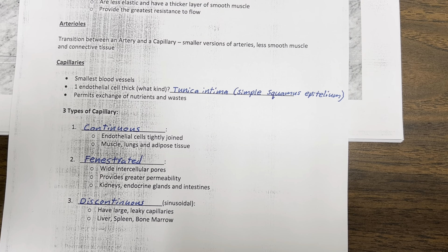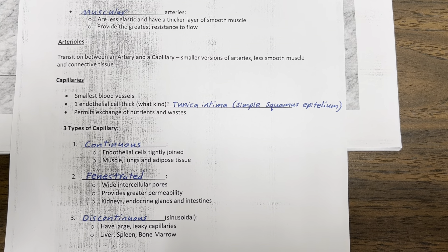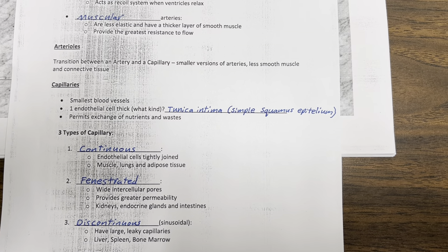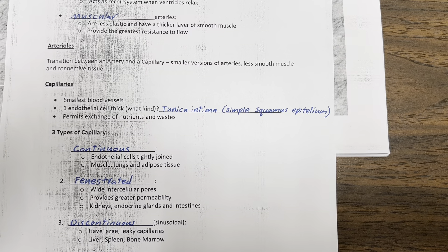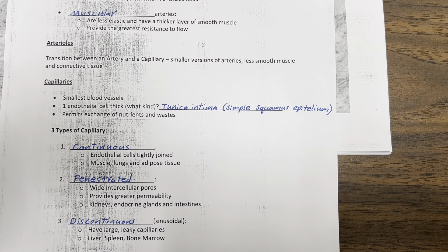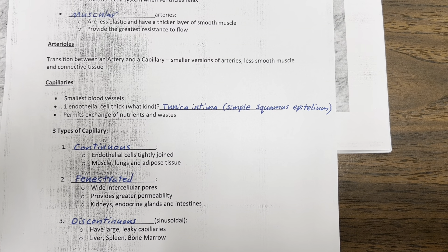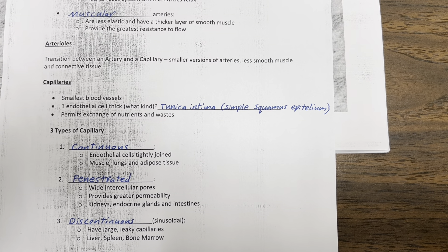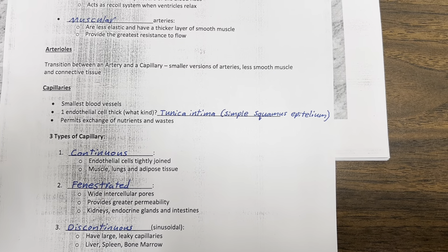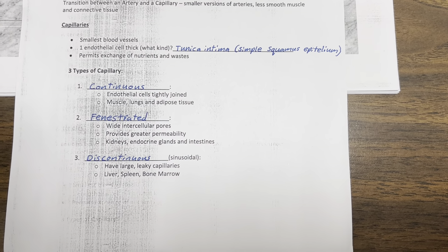Capillaries are the smallest blood vessels. They are one endothelial cell thick, made up of simple squamous epithelium, also called the tunica intima. Capillaries permit exchange of nutrients and waste.